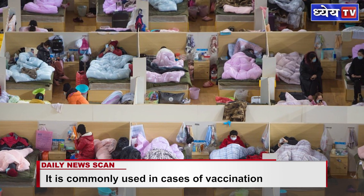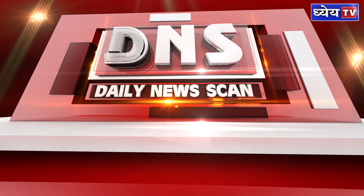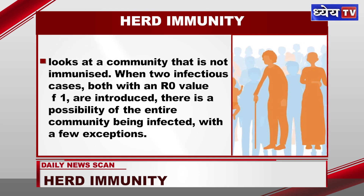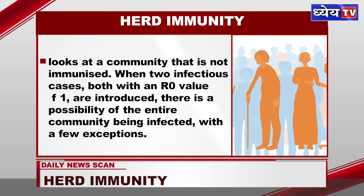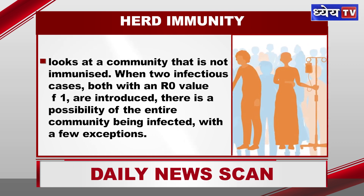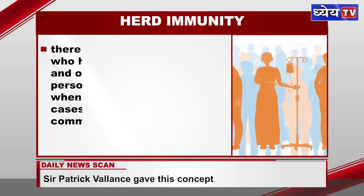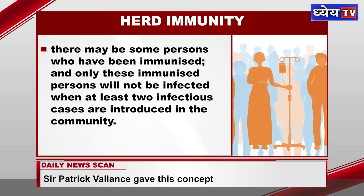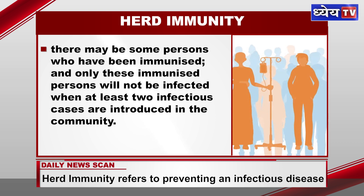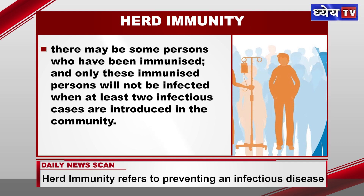There are three ways through which an infection can spread in a community. The first looks at a community that is not immunized — when two infectious cases with an R0 value greater than 1 are introduced, there is a possibility of the entire community being infected with few exceptions. The second scenario involves some persons who have been immunized, and only those immunized persons will not be infected when infectious cases are introduced.